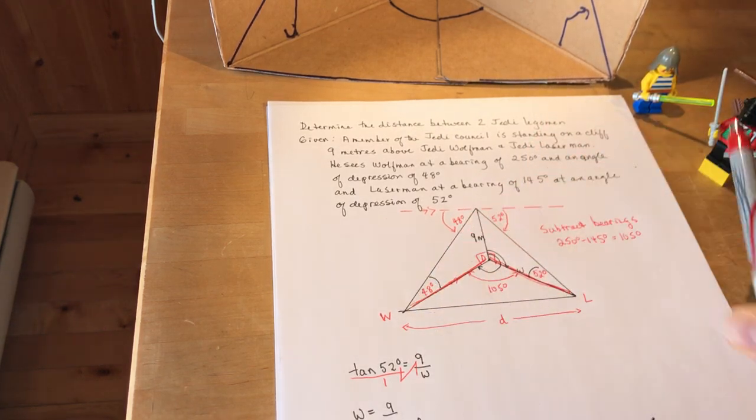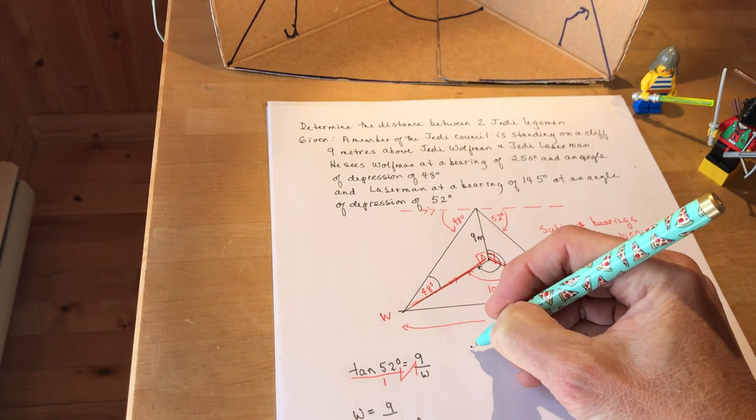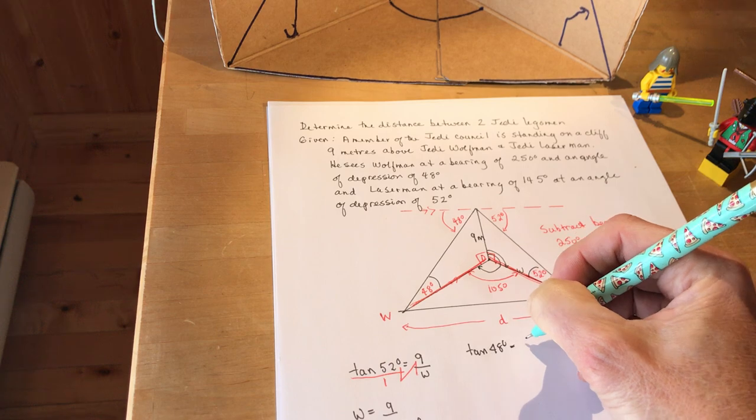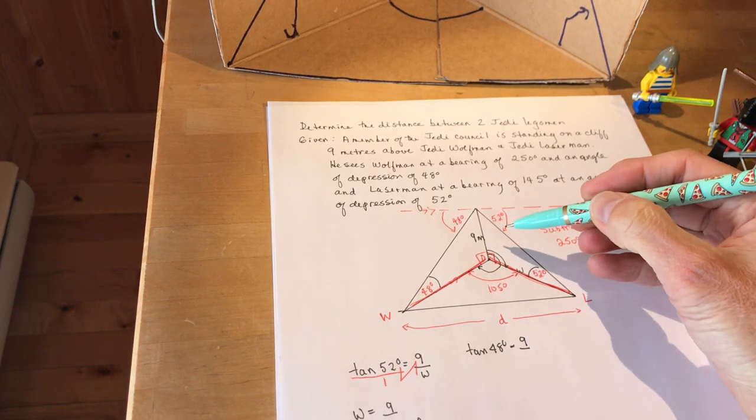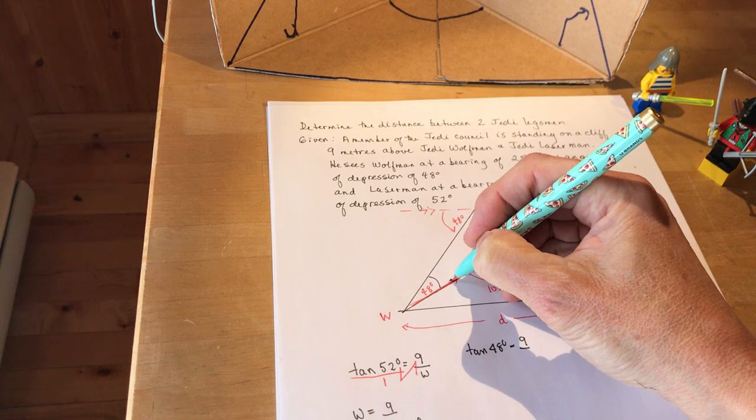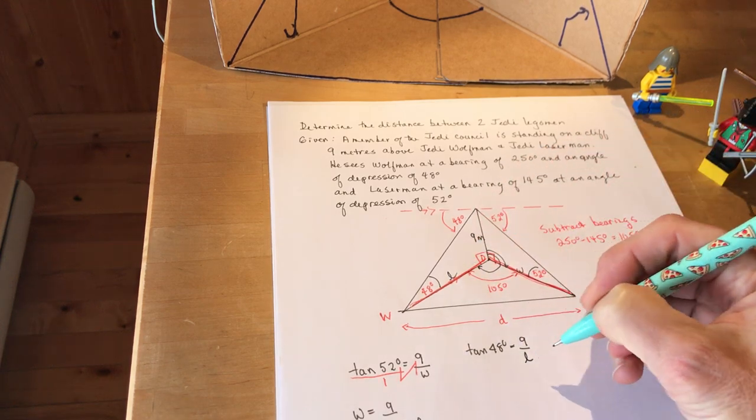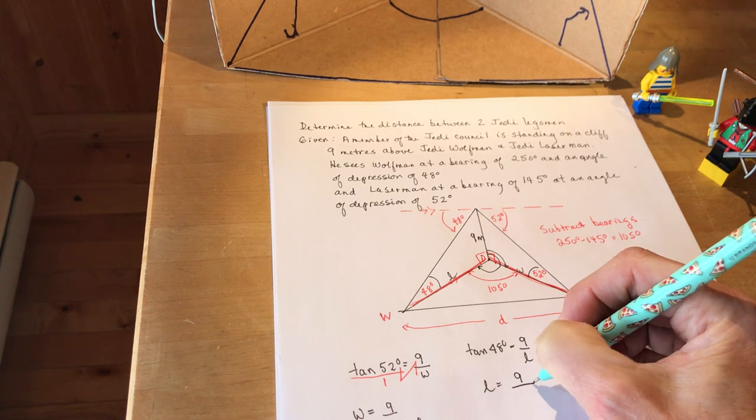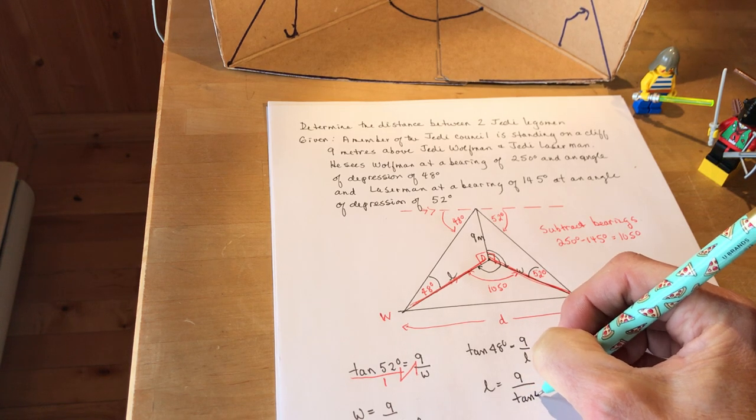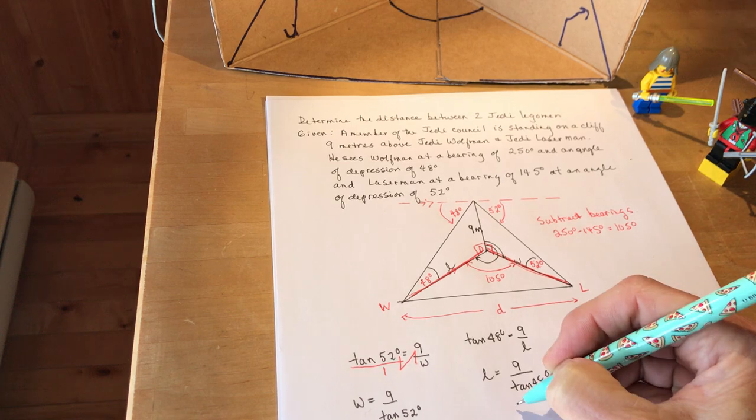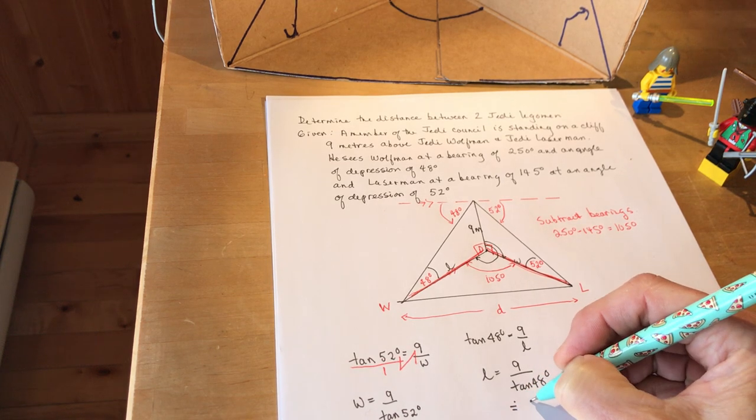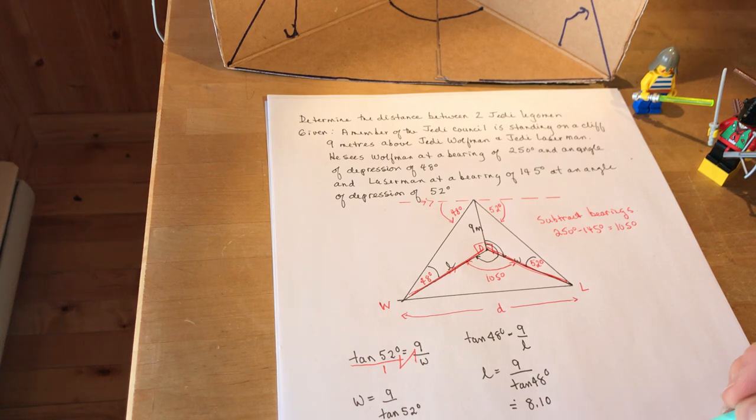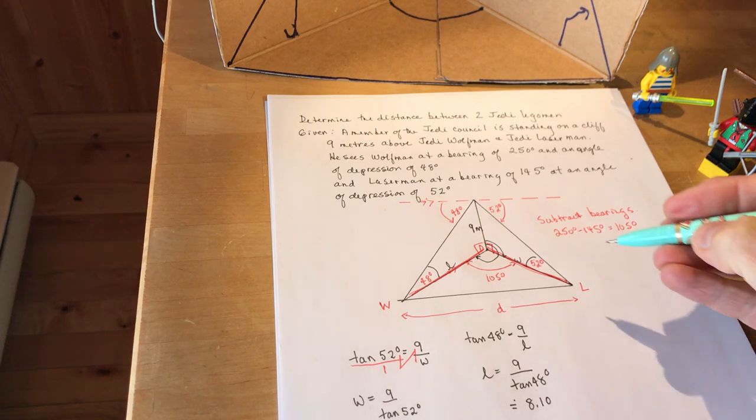And it's the very same calculation except I change the angle. So the tan of 48 degrees is going to be nine over side L. So L is equal to nine divided by the tan of 48 degrees and that comes out to about 8.10. Okay so once you have that now I have the two lengths. I have the angle so I have side angle side.